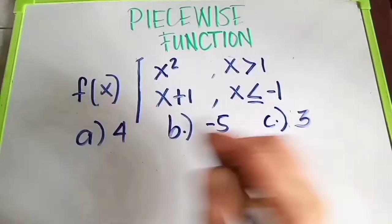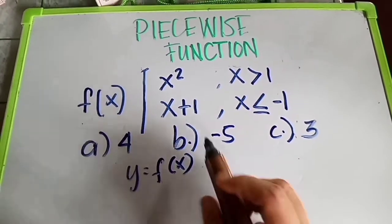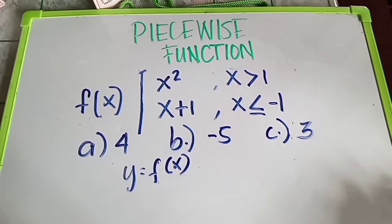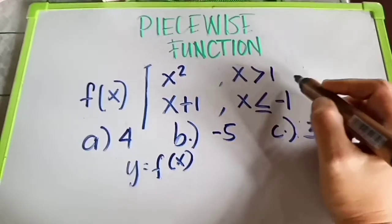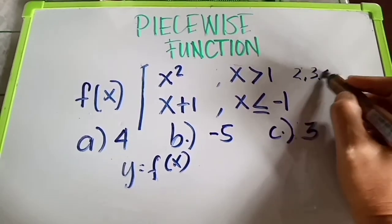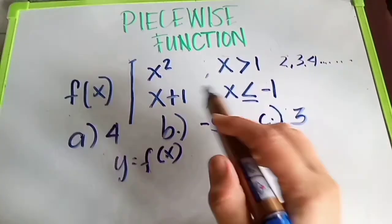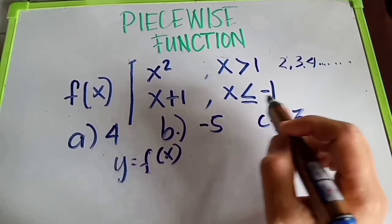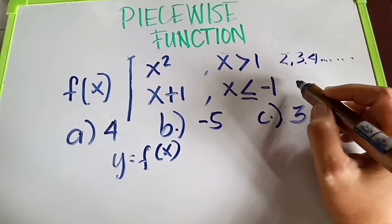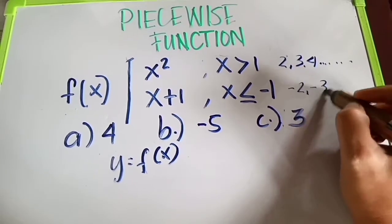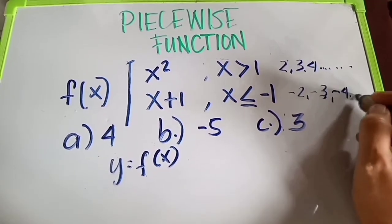We know that f of x is always equal to y. So the first equation is x squared, where x is greater than 1. So think of the numbers where x is greater than 1 — those are 2, 3, 4, up to a million and so on. And for x less than or equal to negative 1, our equation is x plus 1. So those numbers are negative 2, negative 3, negative 4, and so on.